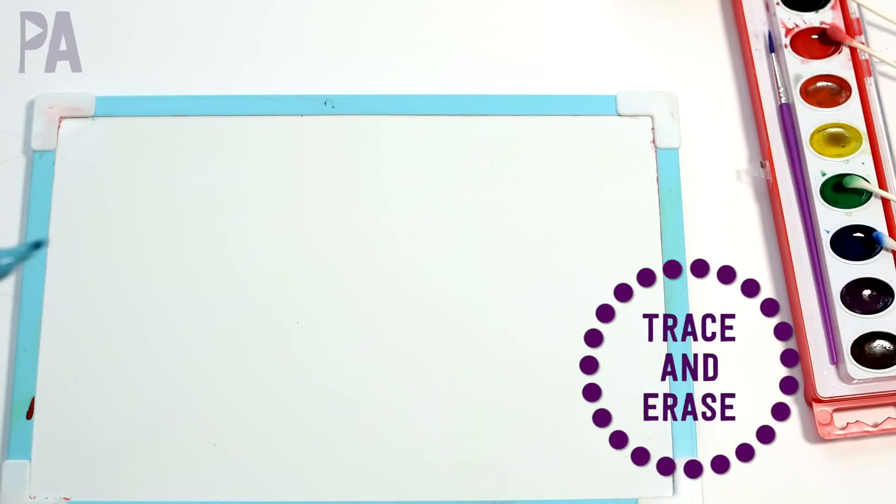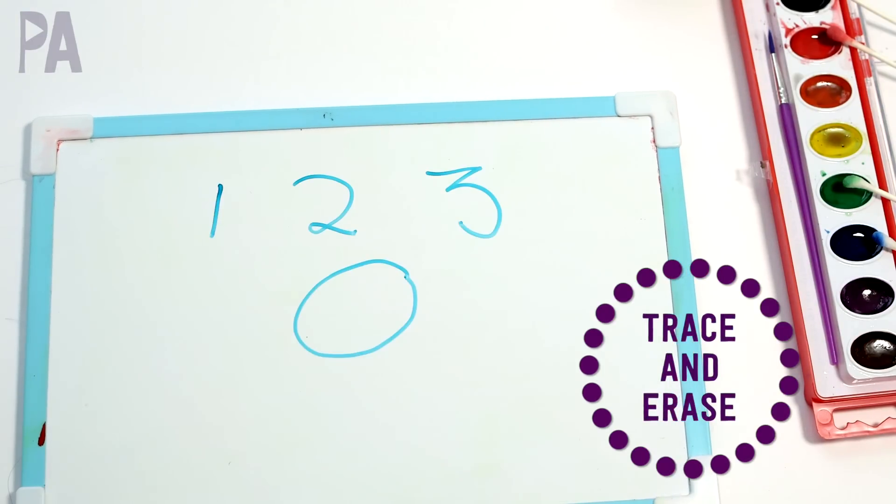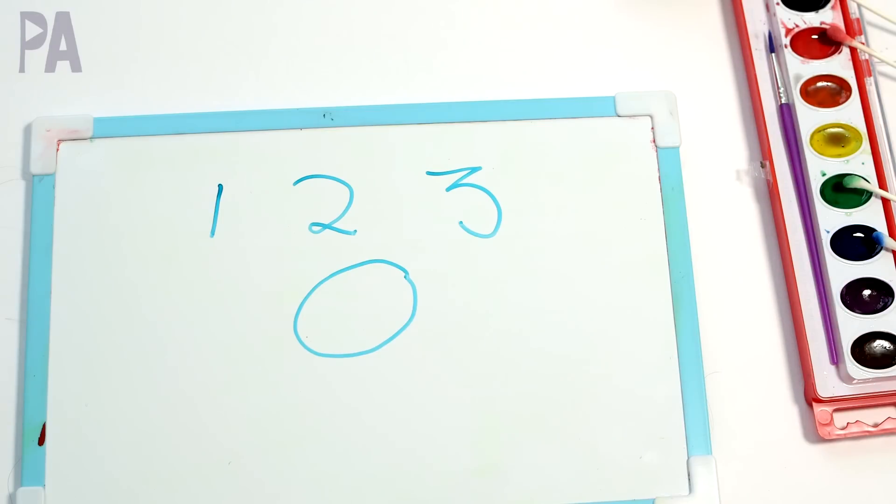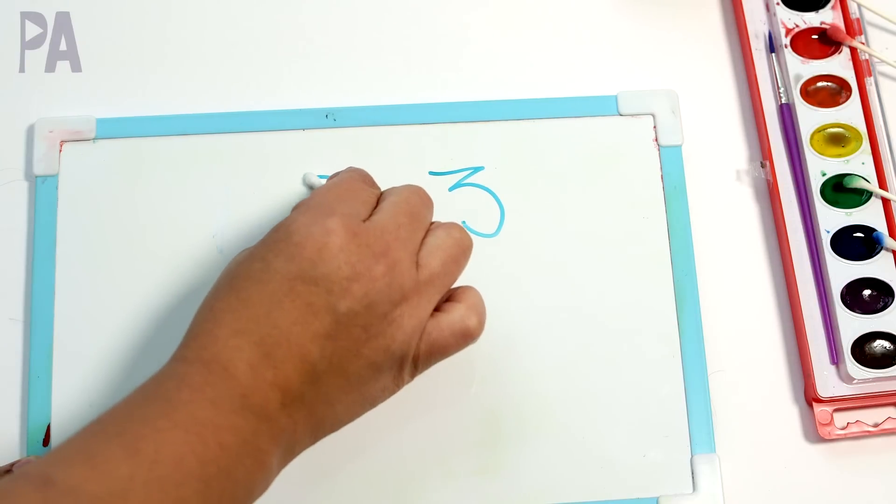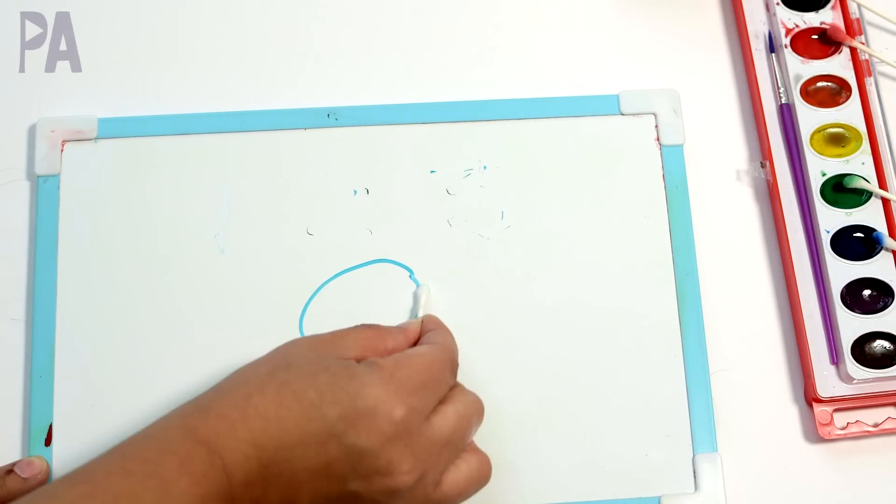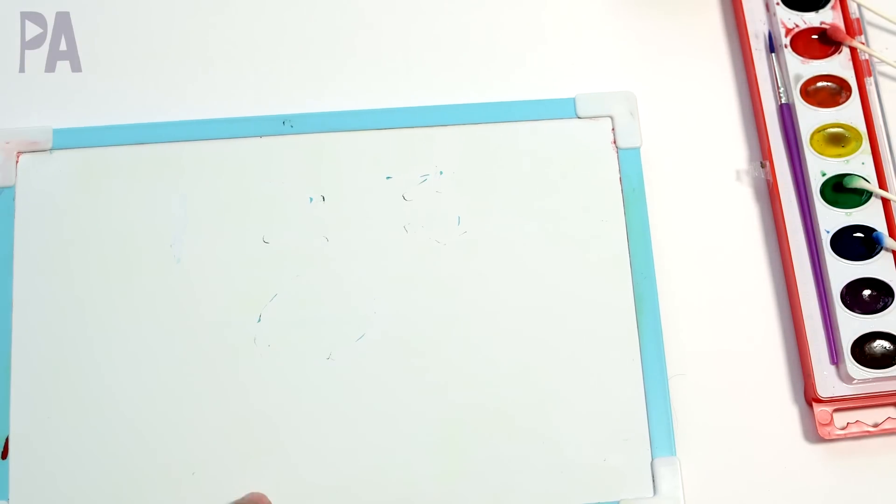If you have a dry erase board or a chalkboard, go ahead and write out shapes or letters or numbers, whatever you're working on. And you can take a Q-tip and erase each one. This will probably keep your child pretty busy trying to get all of that off. And this one, same thing will work for a chalkboard.